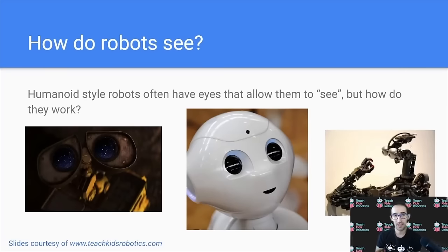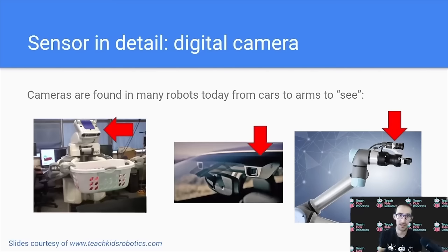So, humanoid-style robots often have eyes that allow them to see, but how do they work? These robots often have two lens-like objects, but how do they work really knowing what's in the environment? So, if we consider sensors again, a digital camera is a sensor that allows a robot to take a picture of the environment to identify what's going on around it.